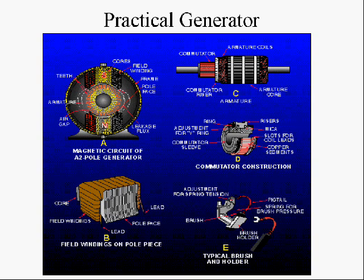Now, a practical generator doesn't just use one single loop of wire. That would be a rather weak generator. And so what we do instead is use many loops of wire. Also, the loops of wire have within them iron to greatly enhance or increase the magnetic field inside the loops of wire. And so we have what they call an iron core armature. The armature is the rotating part of the generator.